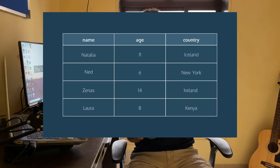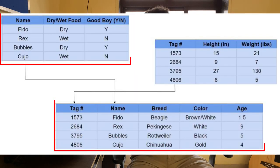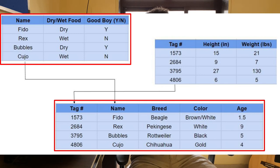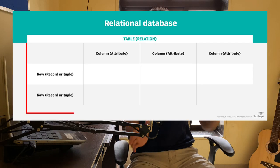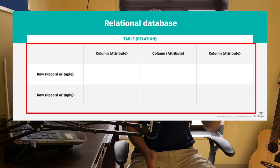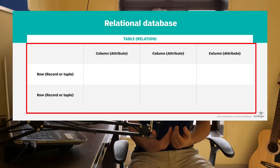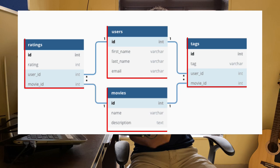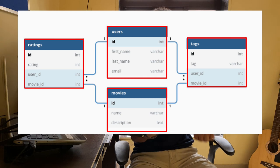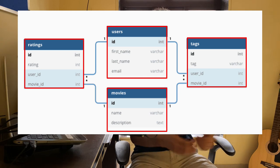To store data we have a database management system — it is a way of organizing data into a proper structure. There are mainly two types: one is the relational database, which stores data in row and column format. It has a fixed schema, so we first need to define the structure, making it easier to read data and define relationships between tables.